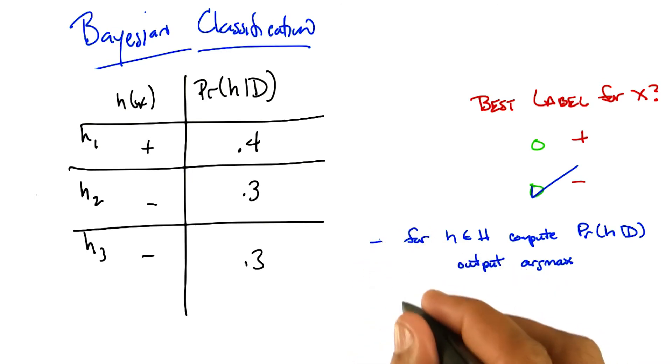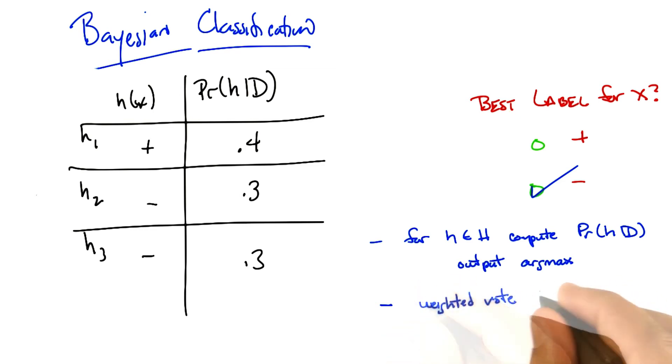But that's not how you find the best label. The way you find the best label is you basically do a weighted vote for every single hypothesis in the hypothesis set, according to the weight being the probability of that hypothesis given the data.